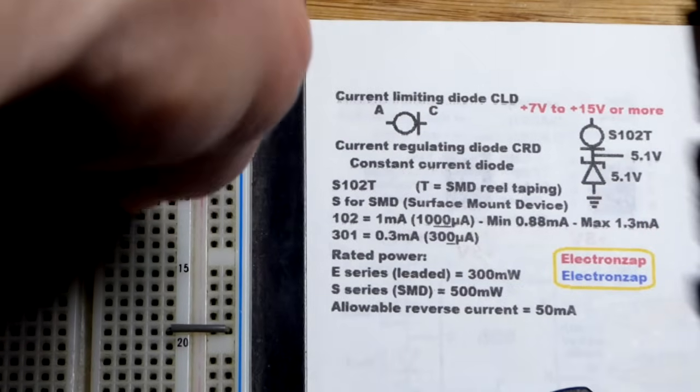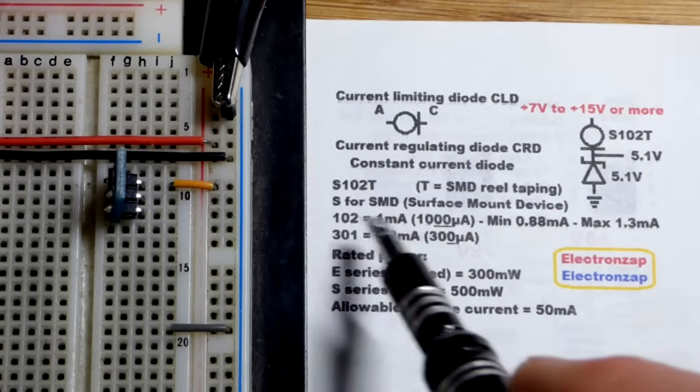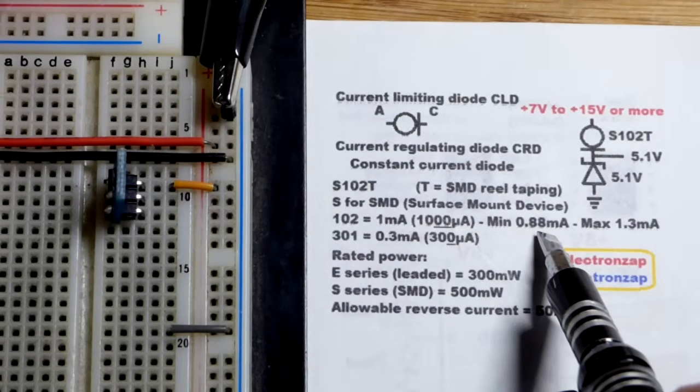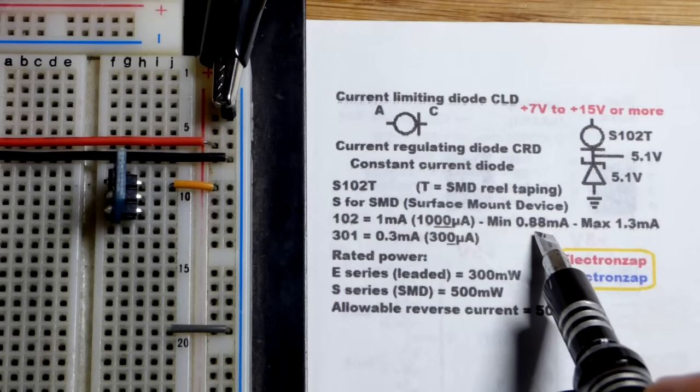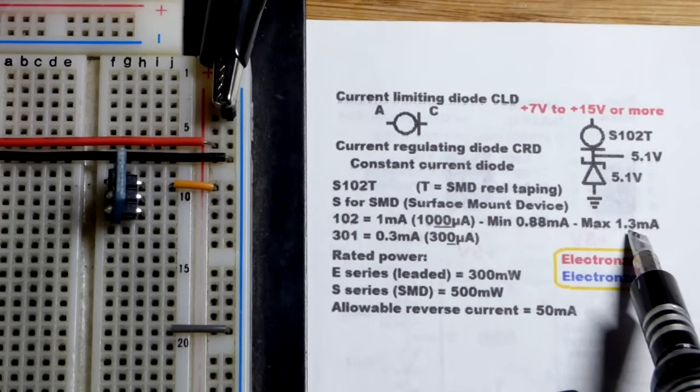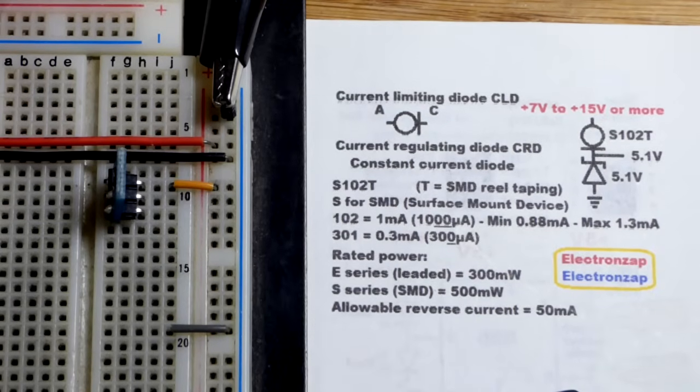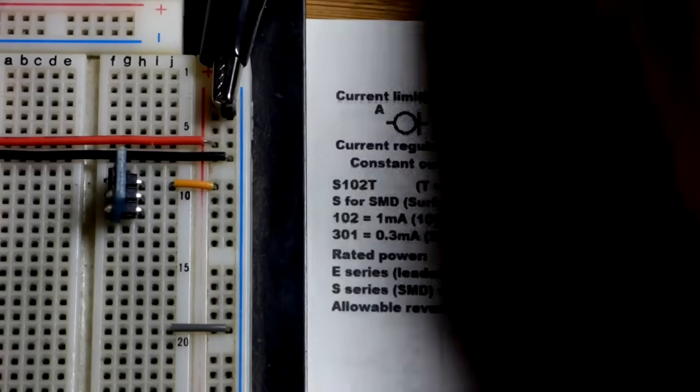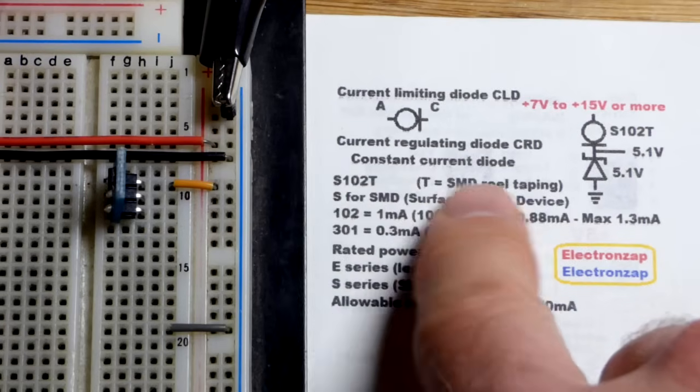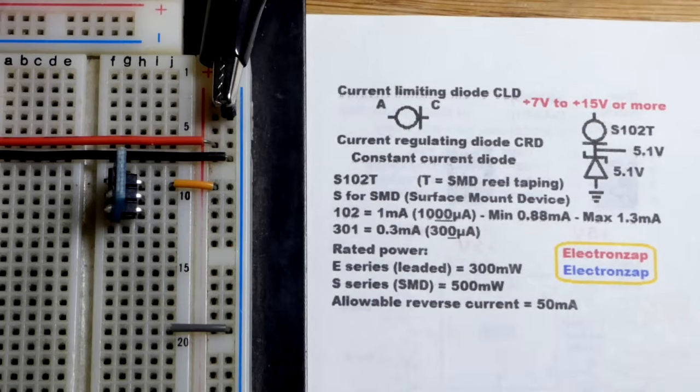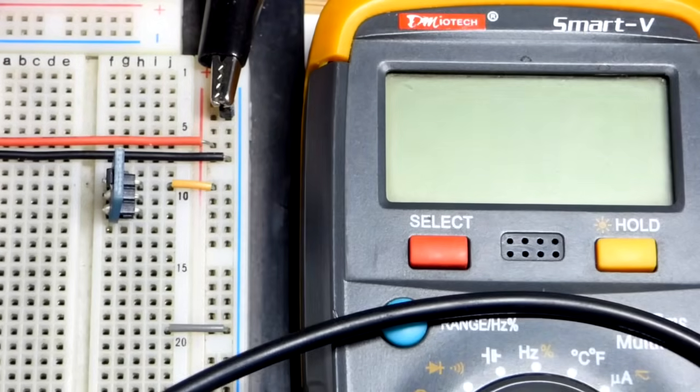So again, it should pass about one milliamp of current, but if you look at the data sheet, it's not a precision component. The data sheet I looked at said for the S102 you could have a minimum of 0.88 milliamps. I think when I measured the other one it said 0.87, so it was close to the minimum there, up to a maximum of 1.3. So you're not going to get an exact one milliamp of current unless you're lucky. This is a surface mount component, that's what the S stands for, and the T means that's how they came in a package before they got separated.